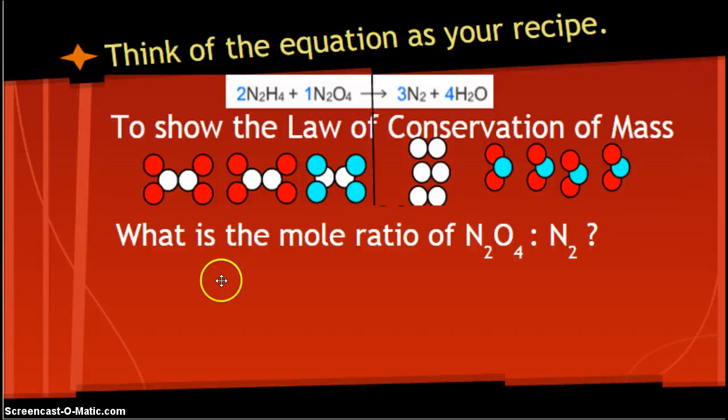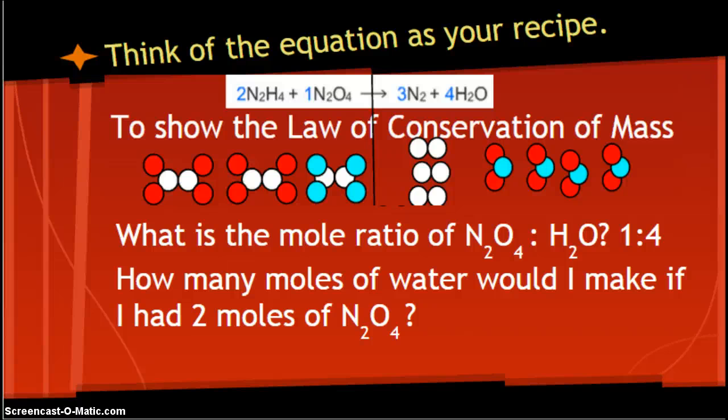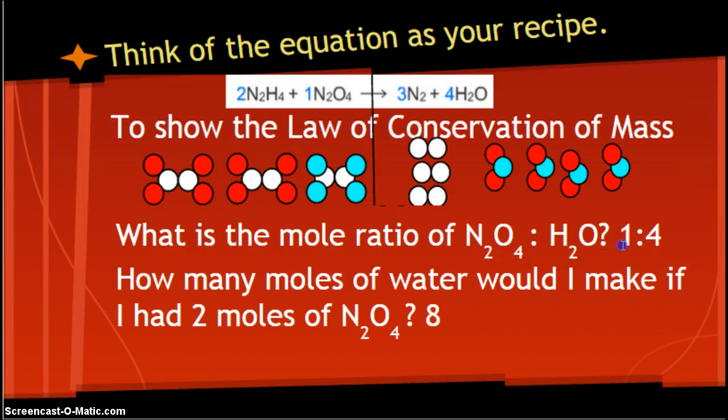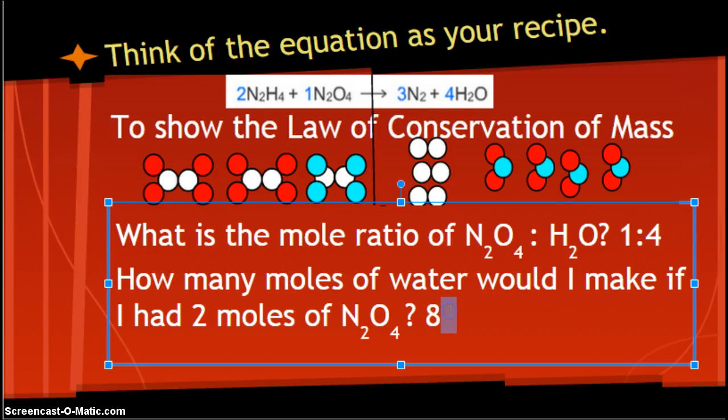Moles are magic. Anytime you're stuck in these problems, convert to moles. When changing from one chemical to another, convert to moles. Your mole ratio is 2:3. Your coefficients is how you're allowed to legally, according to the rules of math and chemistry, go from one chemical to another. What is the mole ratio of N2O4 to N2? We look up here. How many N2O4s do I need? Just one. How many N2s is that going to make? Assuming I have enough of the rest, it's going to make three. So my ratio is 1:3.